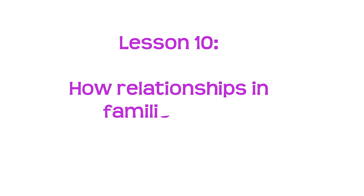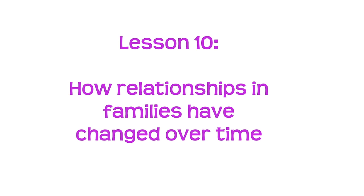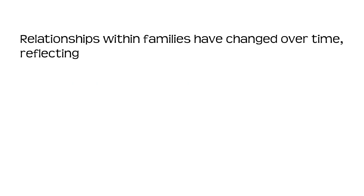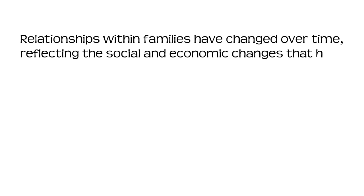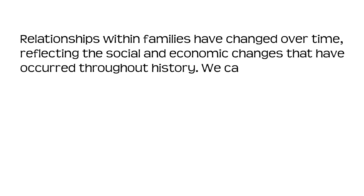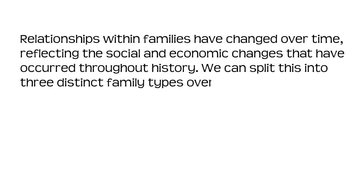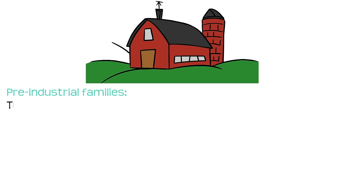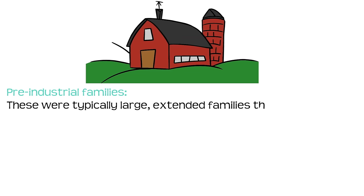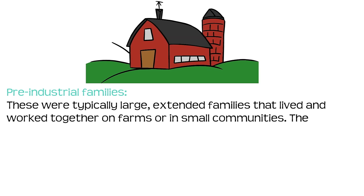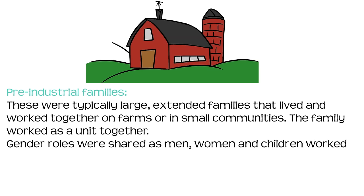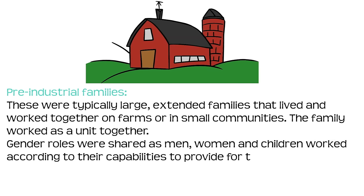Lesson 10: how relationships in families have changed over time. Relationships within families have changed over time, reflecting the social and economic changes throughout history. We can split this into three distinct family types over history: pre-industrial, industrialised and contemporary. Pre-industrial families were typically large extended families that lived and worked together on farms or in small communities. The family worked as a unit together. Gender roles were shared as men, women and grandchildren worked according to their capabilities to provide for the family.